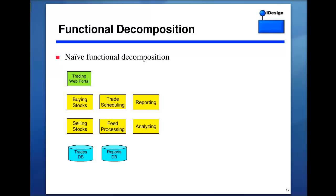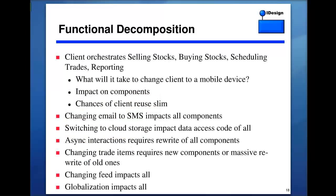Most functional decompositions aren't as extreme as this, but even a moderate one is dead. What's wrong with it? It clearly supports the requirements — you have maximized your coupling to the requirements. And the problem is: systems tend to change over time. The client has to orchestrate buying and selling stocks; somebody has to call sell, buy, and schedule — that has to be the client, putting business logic there and polluting it.